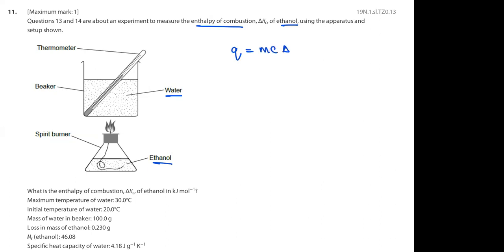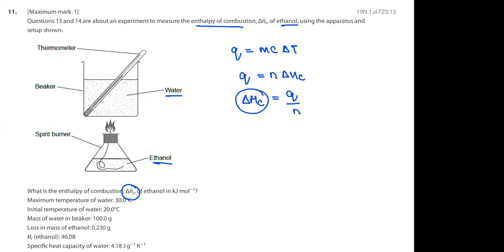The formula we need is Q = MCΔt. They are asking us to find ΔHc. You must know that Q = N × ΔHc, so ΔHc = Q/N. Always remember that ΔHc is always given per mole. In your experiment, you may have any molar values, but to find the value per mole, you take the total heat content transferred to water divided by the actual number of moles of that substance.